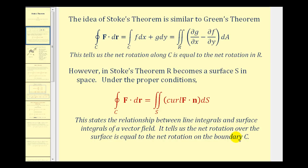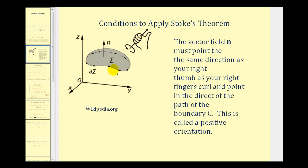So let's now talk about the necessary conditions to apply Stokes' Theorem. If we have our surface here in gray, the vector field N — the unit normal vectors — must point in the same direction as your right thumb, as your right fingers curl and point in the direction of the path of the boundary C. Looking at this diagram, if our thumb is pointing upward in the same direction as the unit normal vectors, notice the fingers would point counter-clockwise, giving this the correct orientation. And this is called a positive orientation, which is required by Stokes' Theorem.